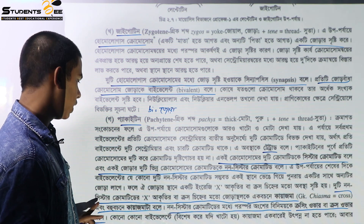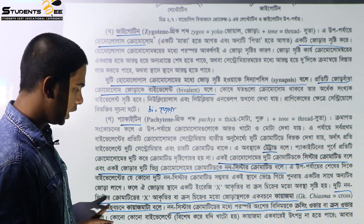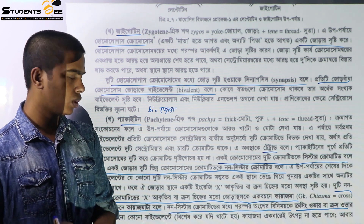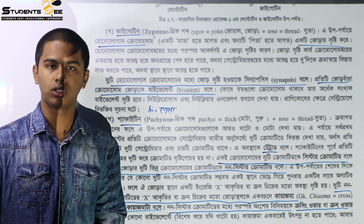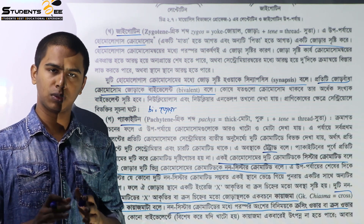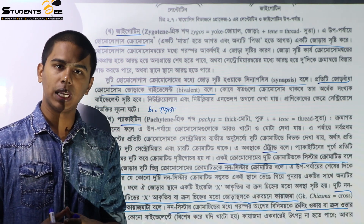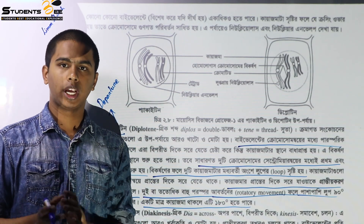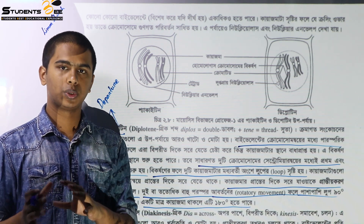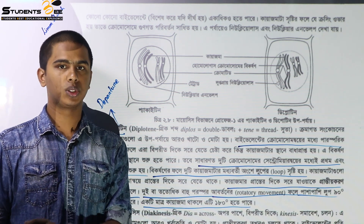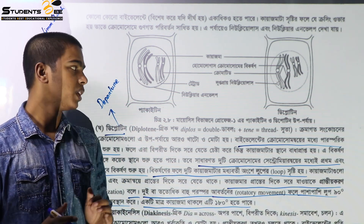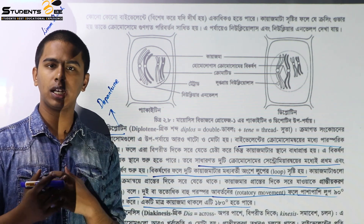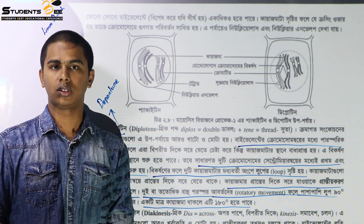The non-sister chromatid forms a cross-correlation; the cross is called the chiasma. The chiasma — and the diplotene stage is starting, also called the diplotene.